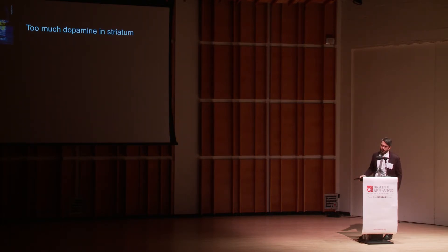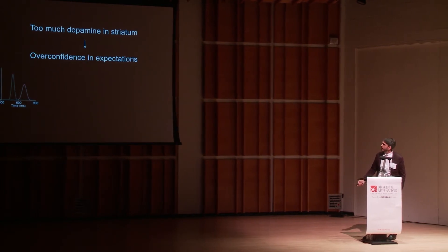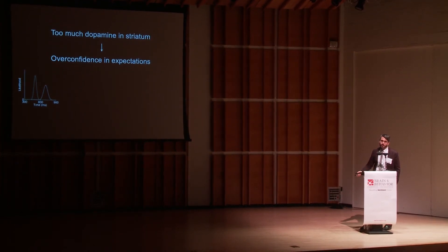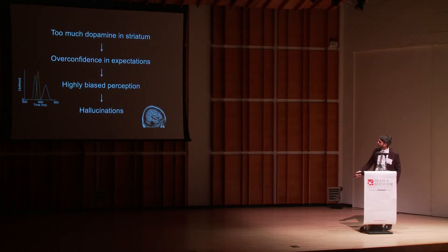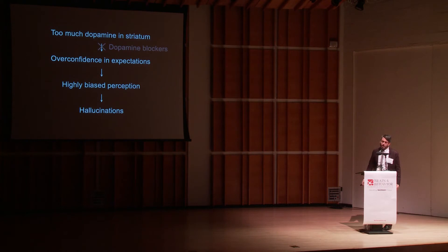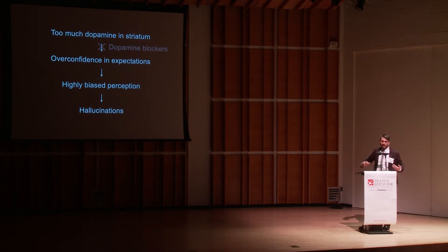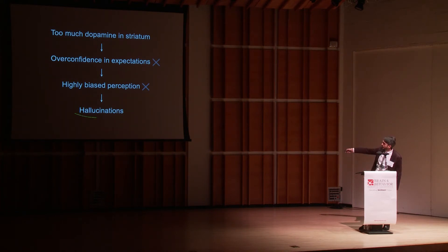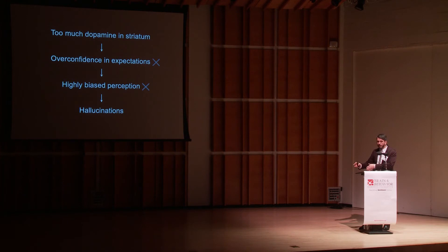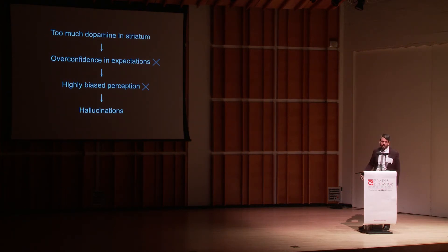This suggests a model — a simplification, but the idea that too much dopamine in the striatum leads to disproportionate confidence in expectations, which leads to more biased perception, and may lead to hallucinations based on our work. This is still ongoing, but we think this model is important for several reasons. We know that most antipsychotics block dopamine at the upstream level, and we're hoping that corrects some of these downstream processes. But some people don't respond to antipsychotics and still have hallucinations. We want to understand this process better to tackle it directly, potentially leading to a new generation of more targeted, improved treatments.